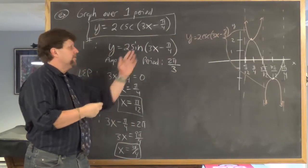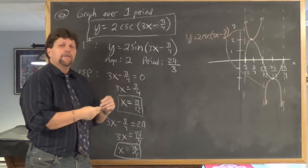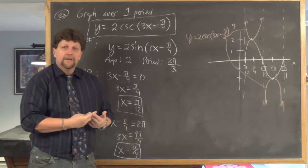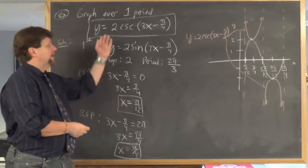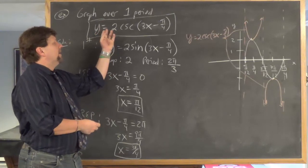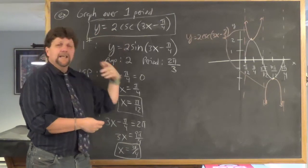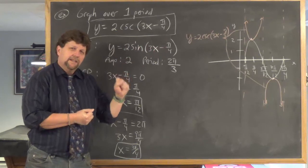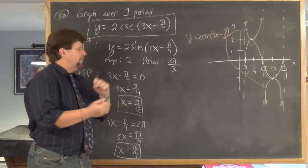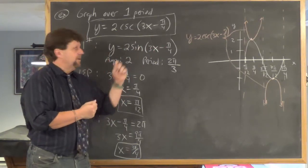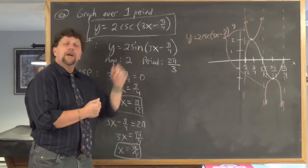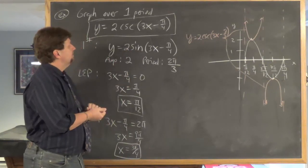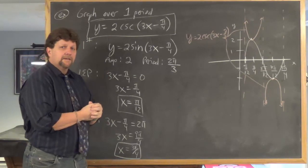So I hope you see that I'm using old stuff — using the graph of sine as my guide for cosecant. Likewise, if asked to graph y equals 2 secant (3x minus pi over 4), as soon as I see that it's a secant, the first thing I would graph would be a cosine function. I hope it makes sense.